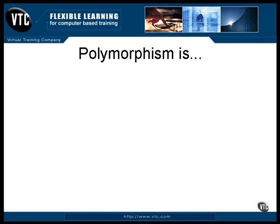Polymorphism is one of those object-oriented words that sounds a little scary at first, but it's really quite simple. The root of the word is a bit weird. Morph means to change into something else, and poly means many. It refers to the fact that an object can be changed into many different things. Well, the object doesn't really change. The word masquerade would actually be more accurate — there really is no changing involved. It's all a matter of how you look at an object.